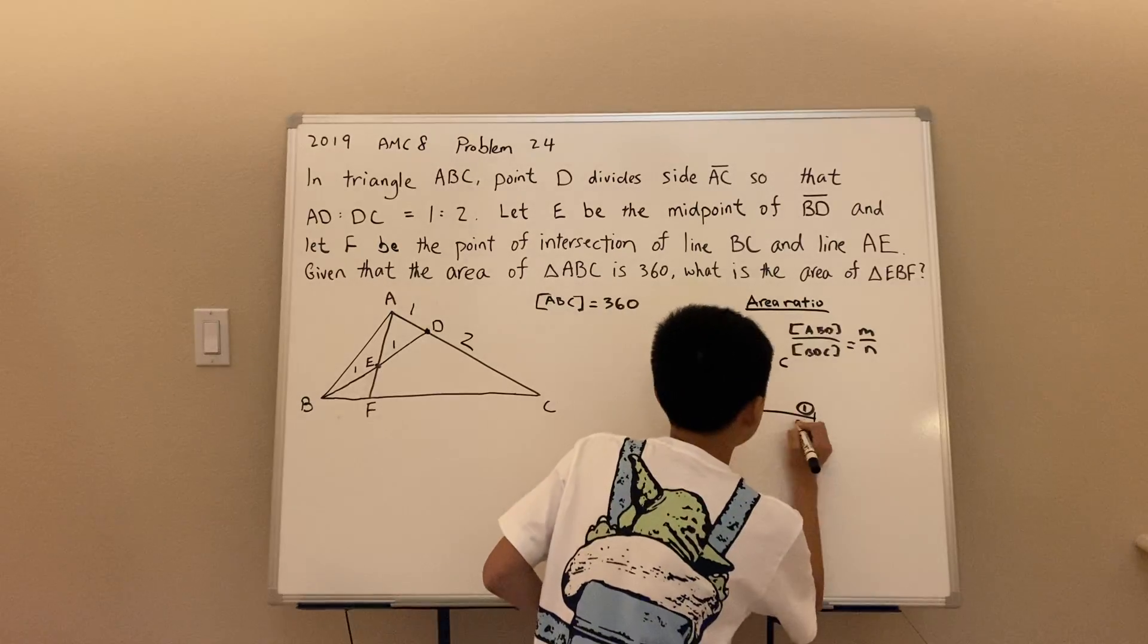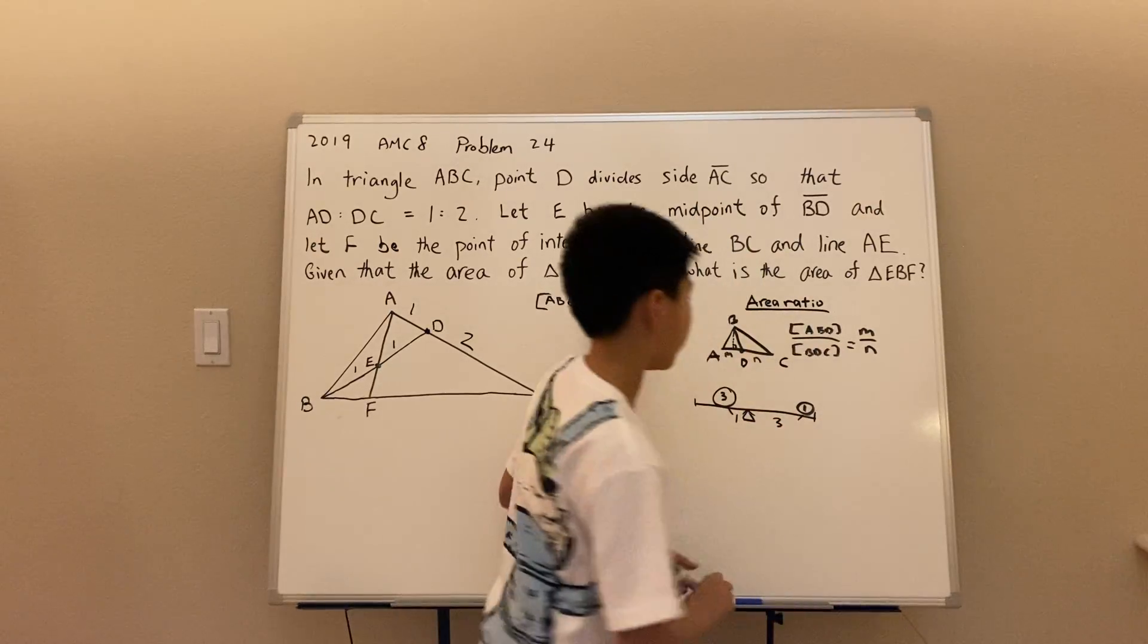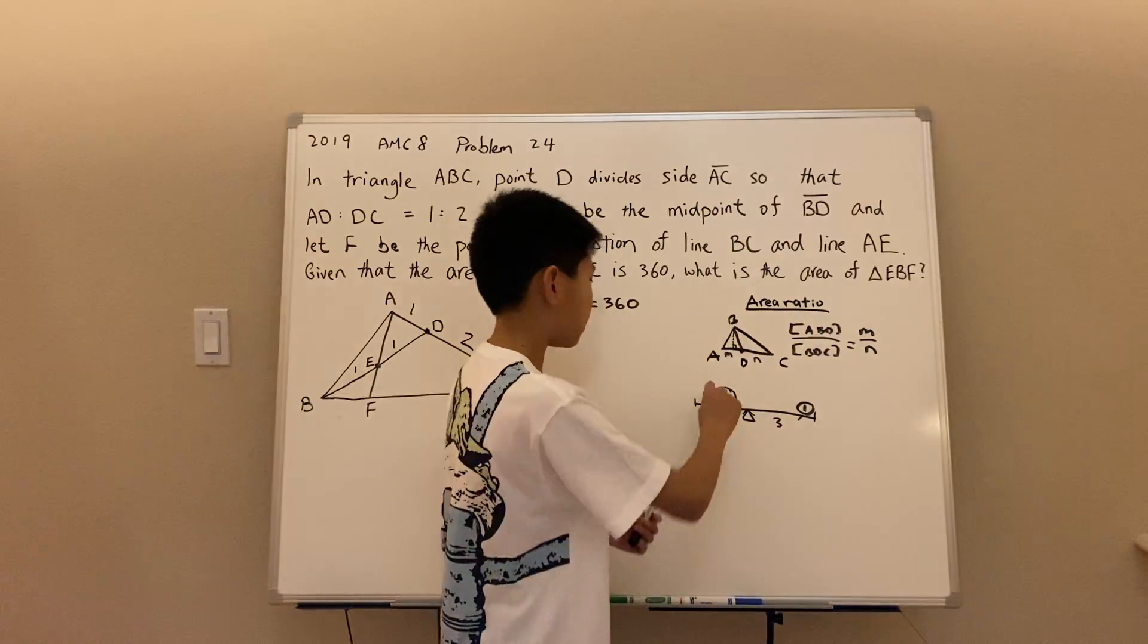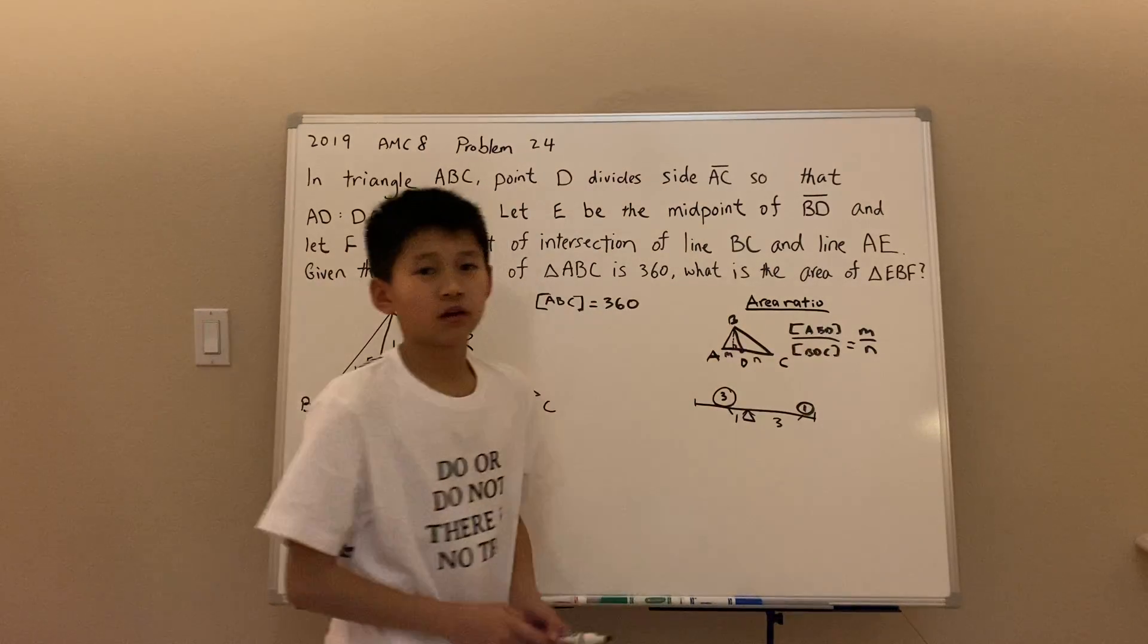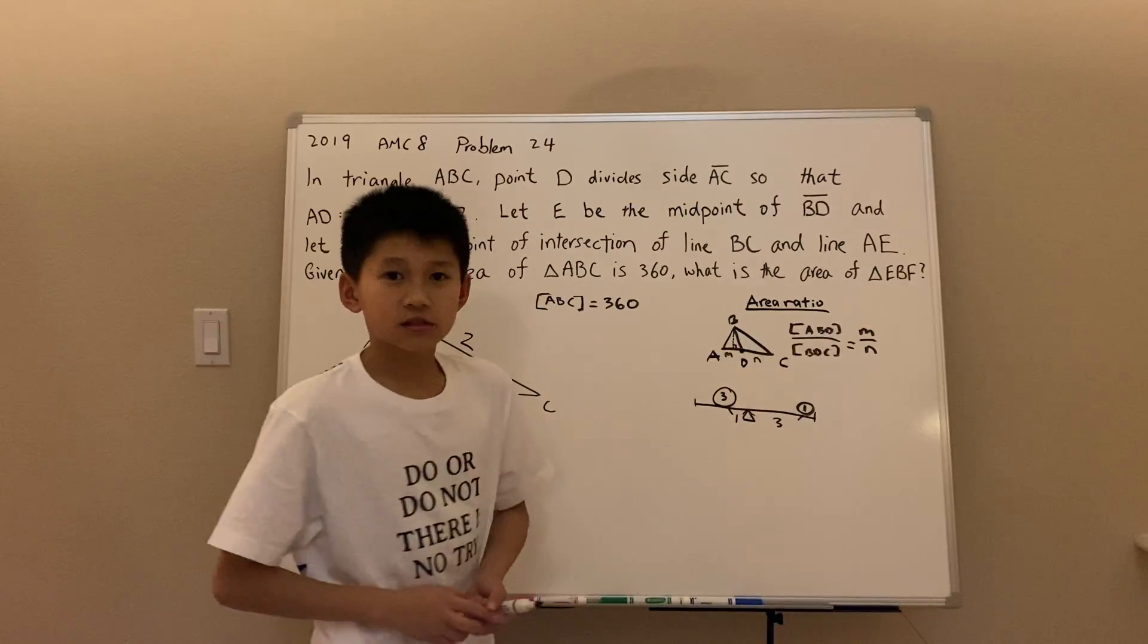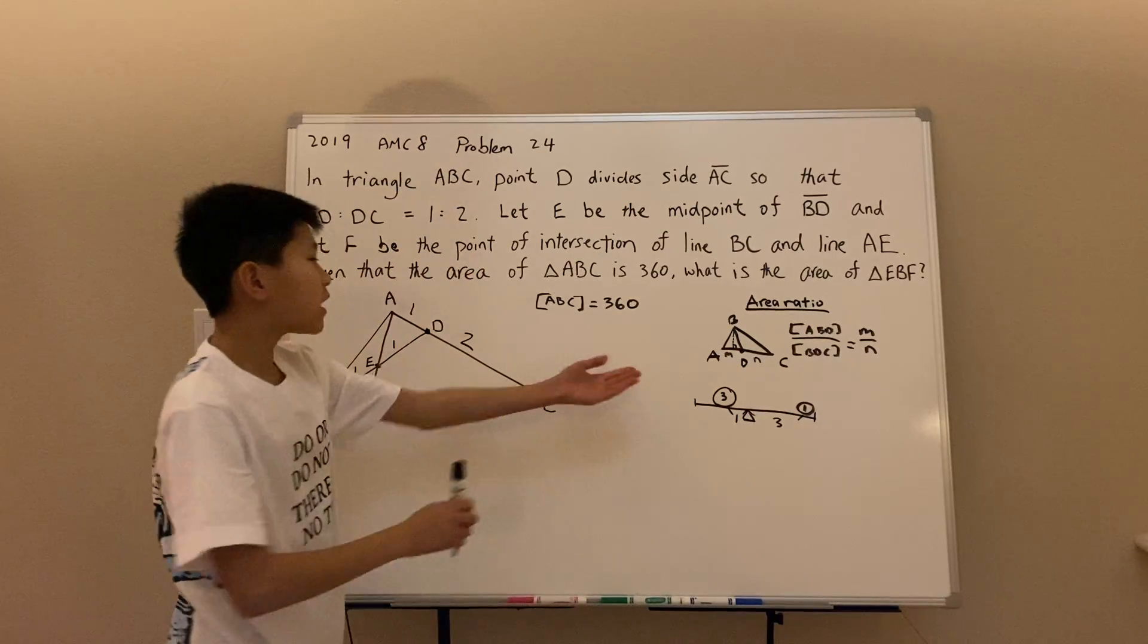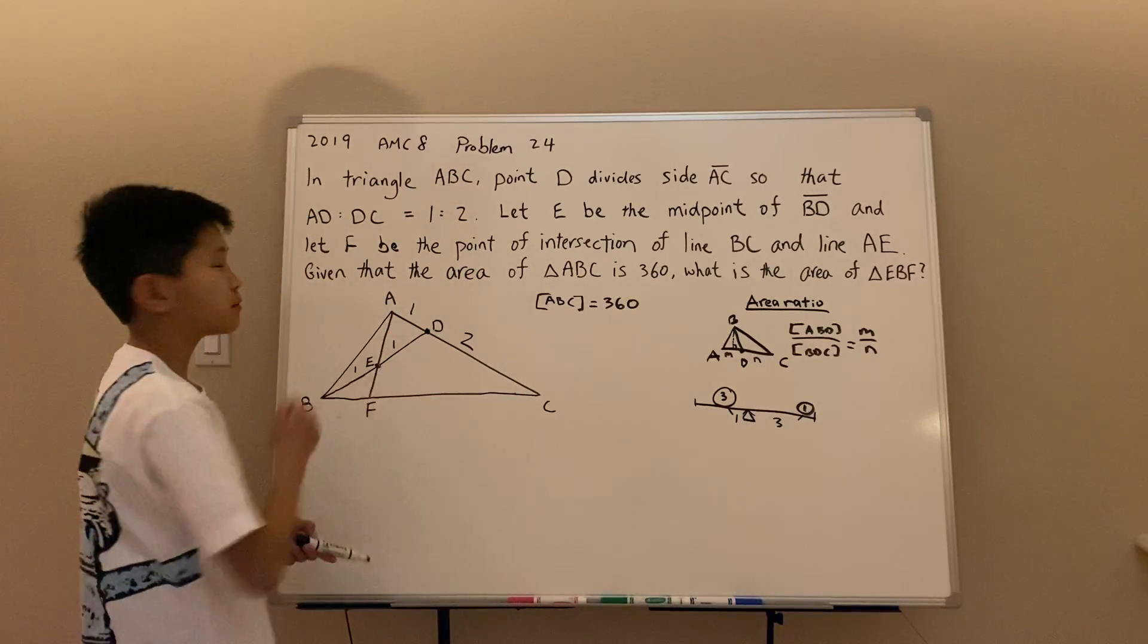Well, he has to be three units far away so that the seesaw balances out. Because three times one equals three times one. So the seesaw balances. Well, we can use this logic in this problem.